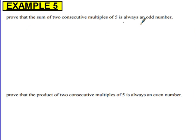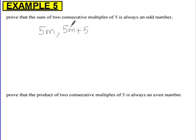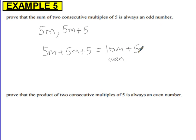Example 5: Prove that the sum of two consecutive multiples of 5 is always an odd number. A general multiple of 5 is 5m, and the next consecutive multiple is 5m plus 5. The sum is 5m plus 5m plus 5, which is 10m plus 5. Now 10m is divisible by 2, so that's even. Adding 5 onto an even number gives an odd number. So the sum is always odd.